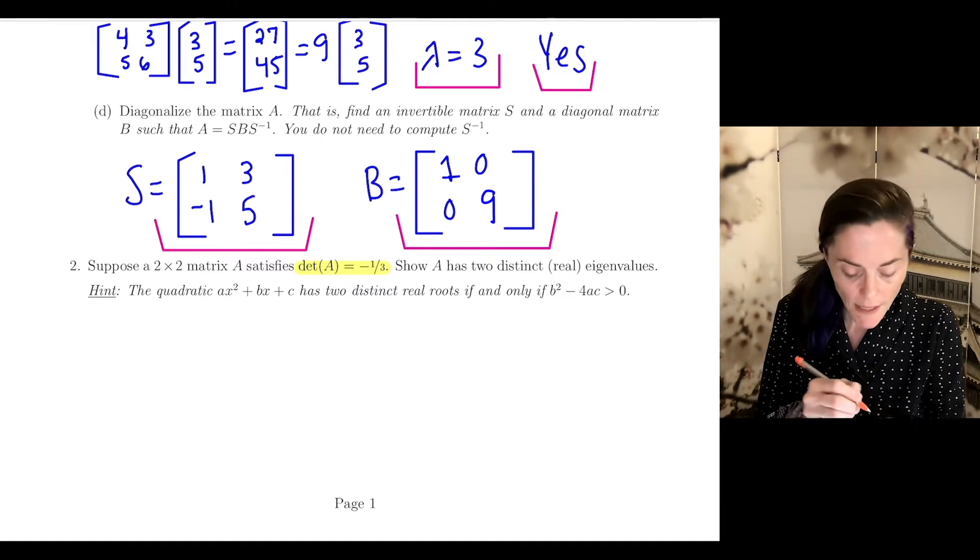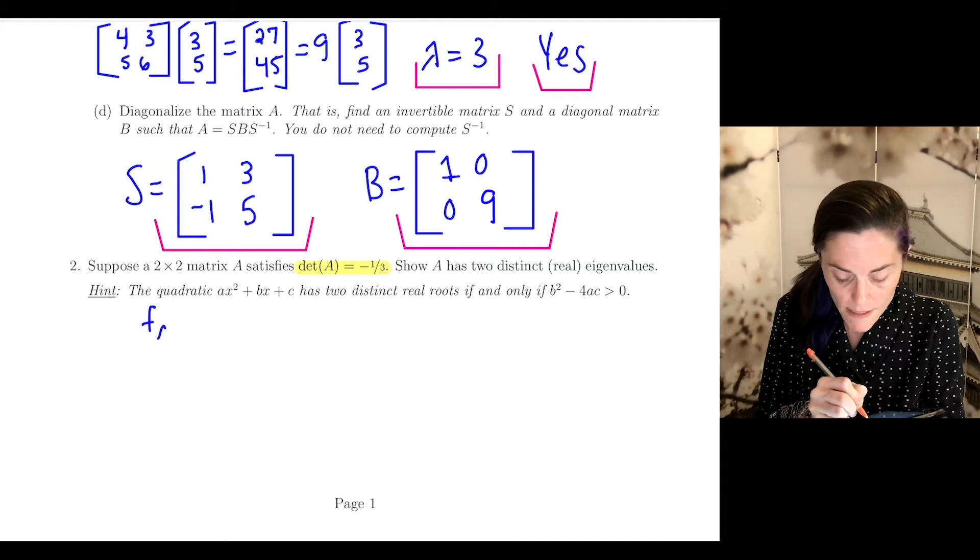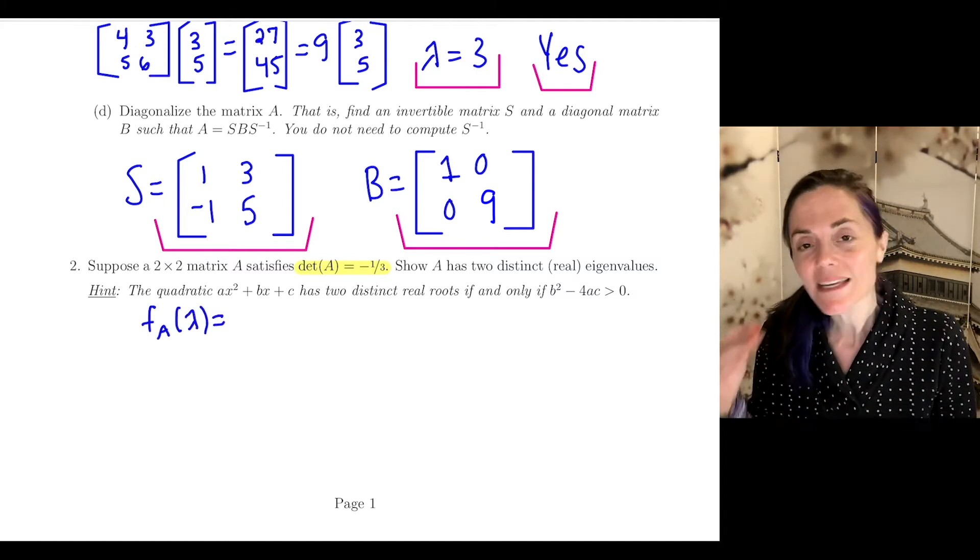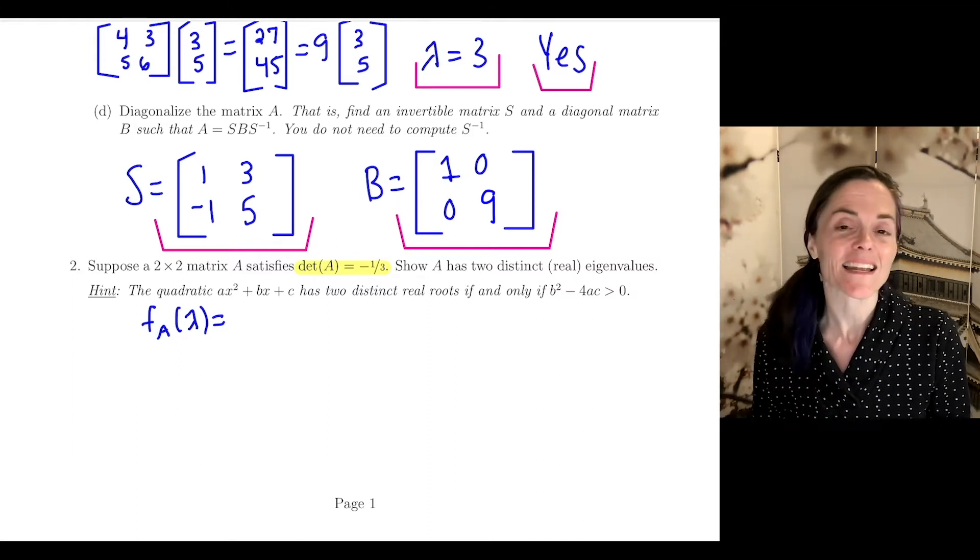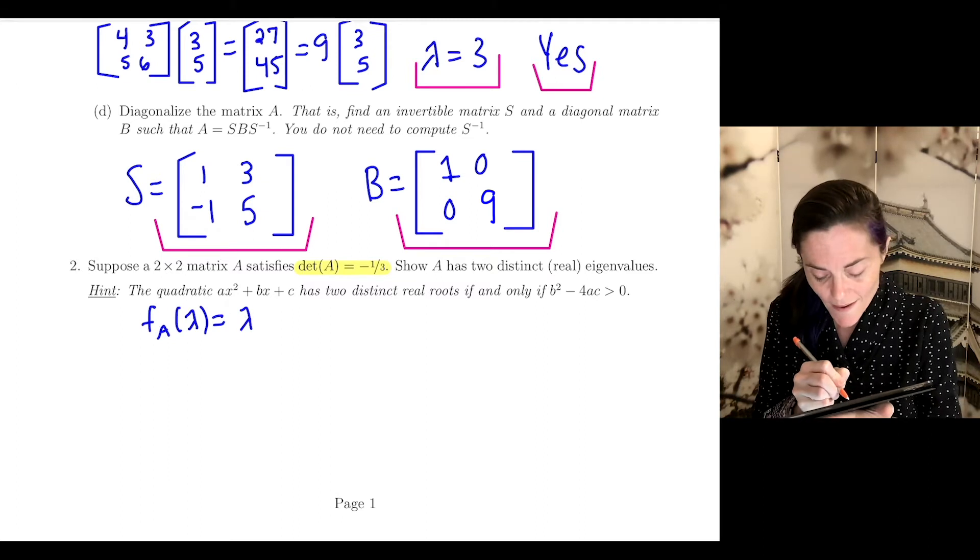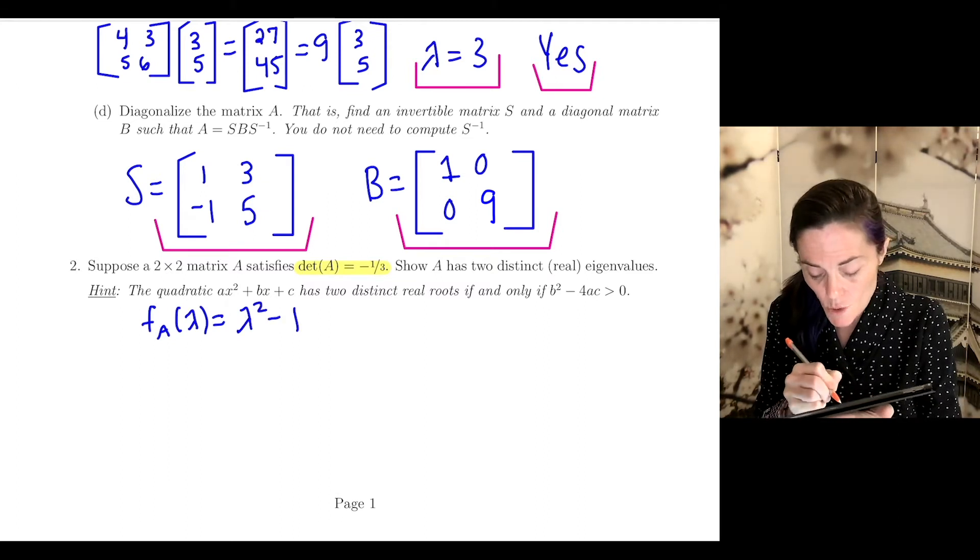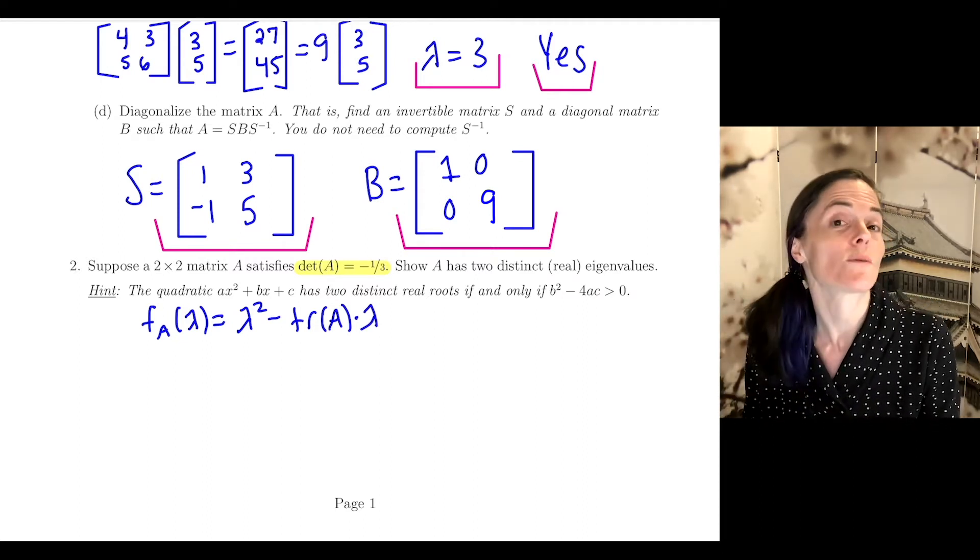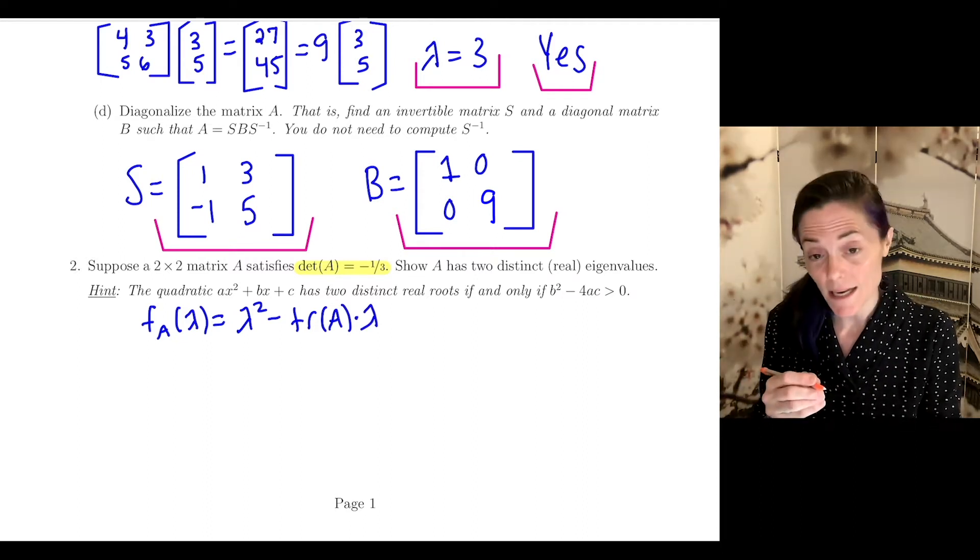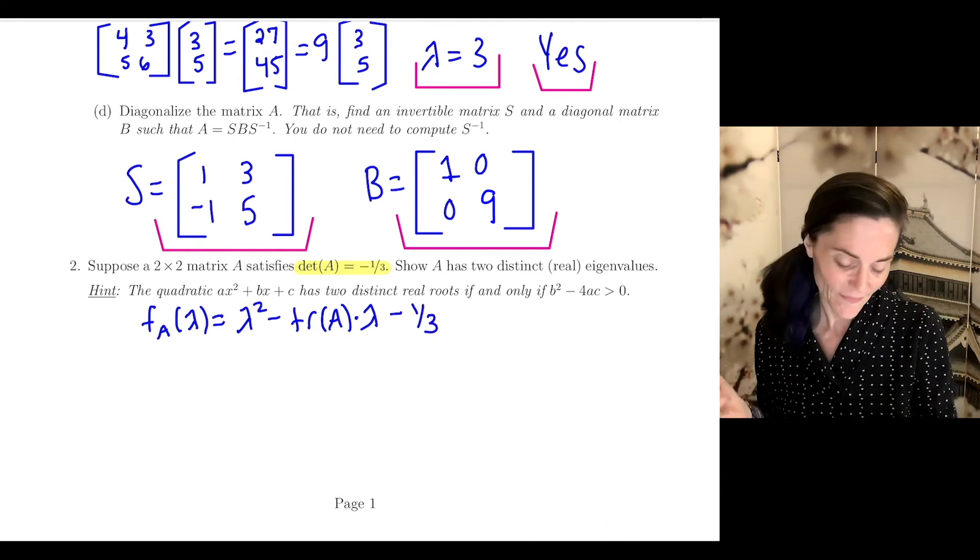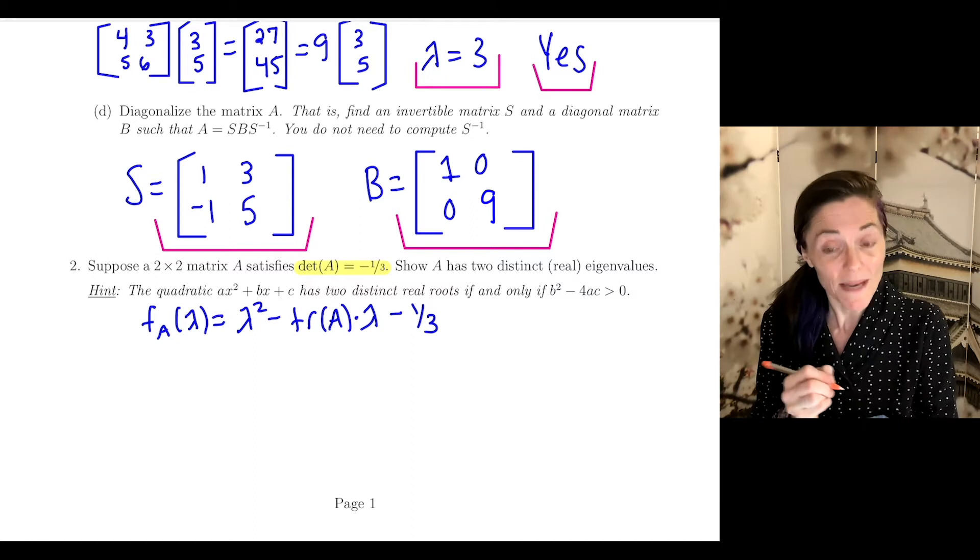Let's write down the characteristic polynomial for matrix A. When we have a two-by-two matrix, we discussed in class a shortcut: it will be lambda squared minus the trace of the matrix times lambda plus the determinant. But here the determinant is negative one-third, so minus one-third.